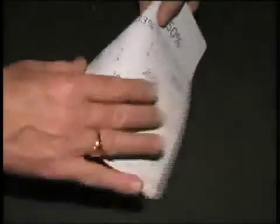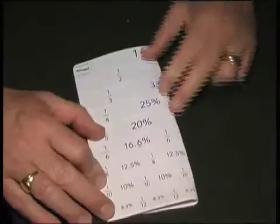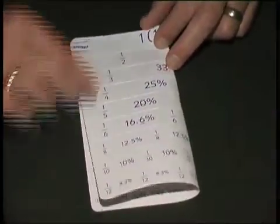By folding down the halfway line, we can see and explain to children that six twelfths is the same as five tenths or three sixths or a half, and two halves make up a whole.